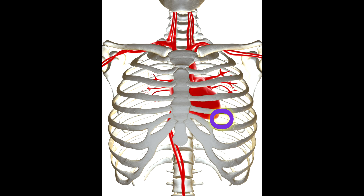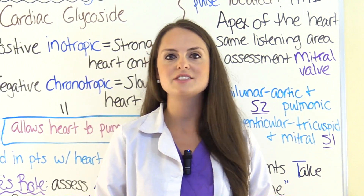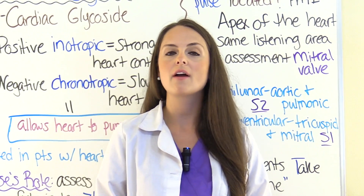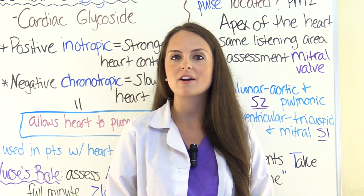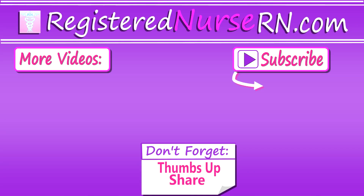Therefore, whenever you're taking the exam, you will click within this area to determine the apical pulse before you administer Digoxin. That wraps up this NCLEX review question of the week. Don't forget to check out our other NCLEX review questions and resources. Thank you so much for watching, and don't forget to subscribe to our channel for more videos.